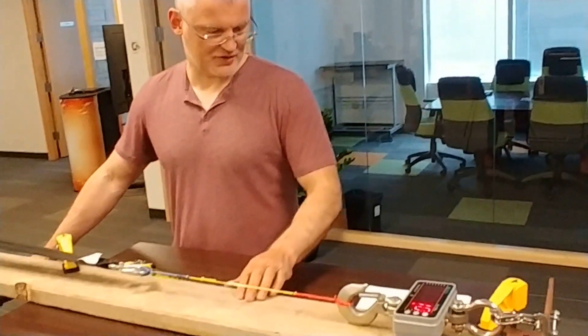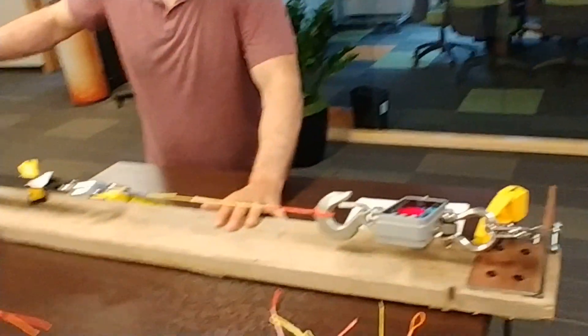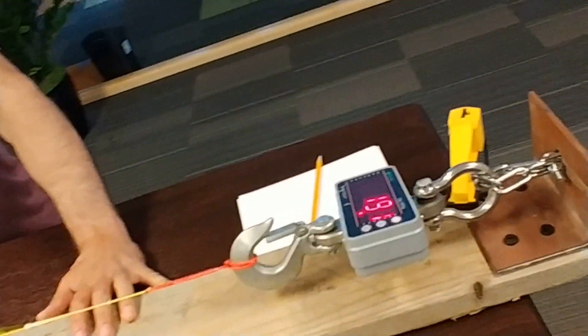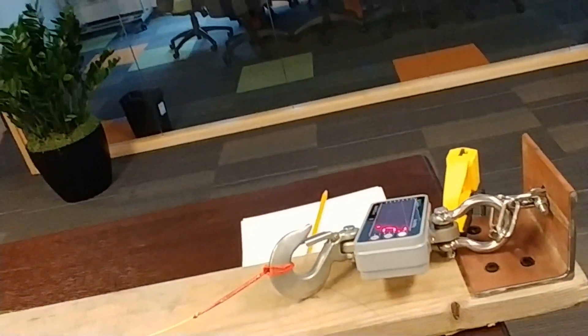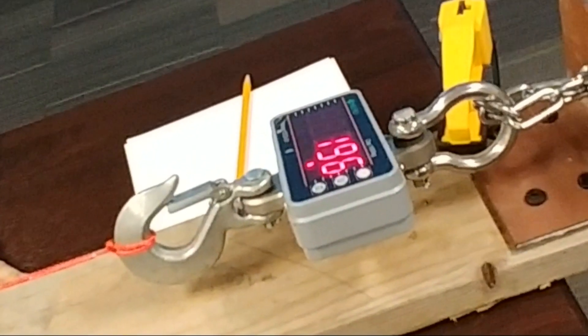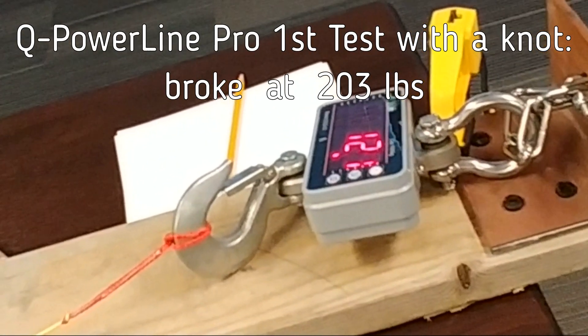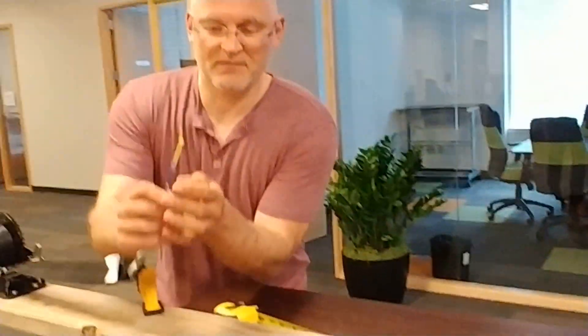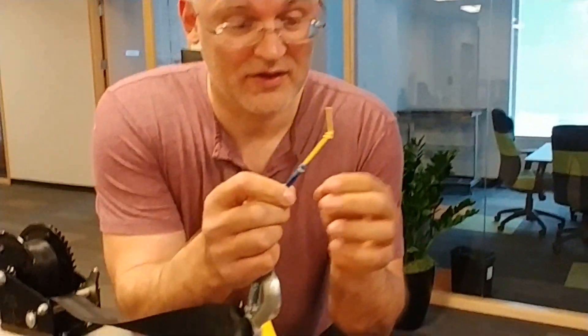Here we go. We're at 120 pounds, 150 pounds. Okay, it broke. It broke at less than 200 pounds. And it broke right here at the knot. It didn't break at the loop. It broke at our hand tie knot.